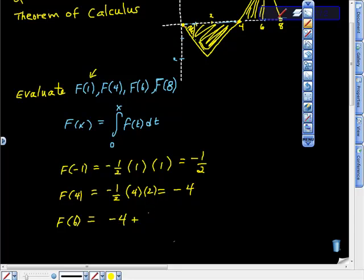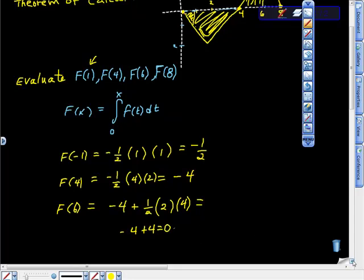Plus one half base times height, so the base is 2, and if you go back up to the graph and look, the height was 4, so that would be negative 4 plus 4 for a total area of 0.